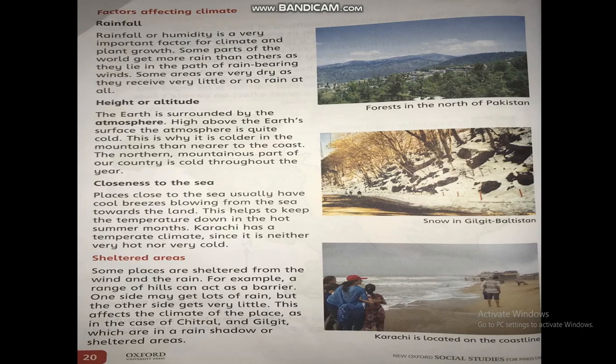Sheltered areas: Some places are sheltered from the wind and the rain. For example, a range of hills can act as a barrier. One side may get a lot of rain but the other side gets very little. This affects the climate of the place, as in the case of Chitral and Gilgit, which are in a rain shadow and sheltered area.